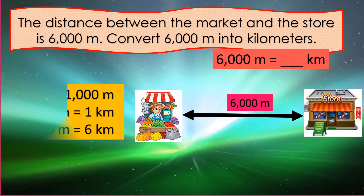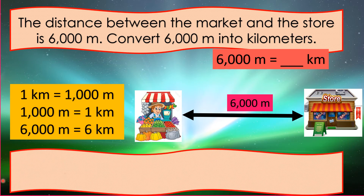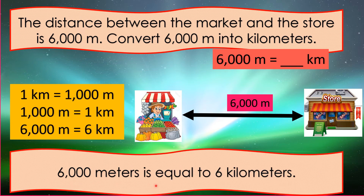Students, look at the pictures. This is the market and this is the store. The distance between the market and the store is six thousand meters. You are going to convert six thousand meters into kilometers. Remember that one kilometer is equal to one thousand meters. So if there are six thousand meters, it means there are six kilometers. Six thousand meters is equal to six kilometers.